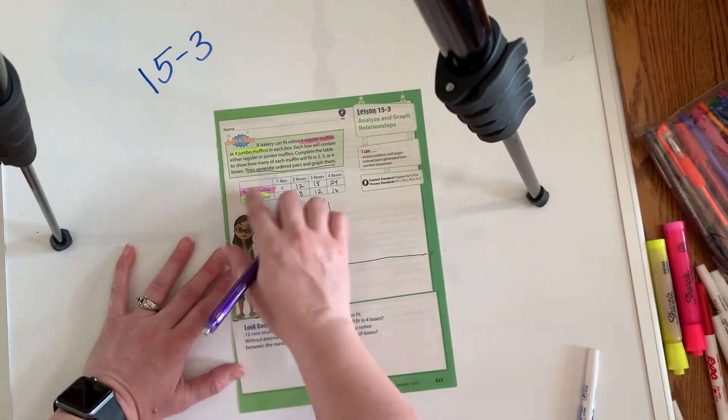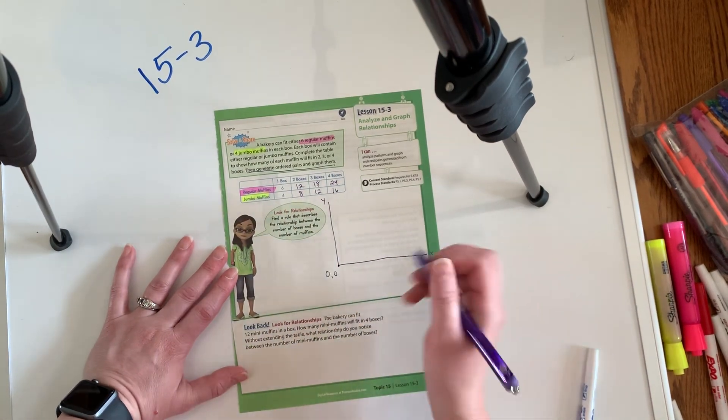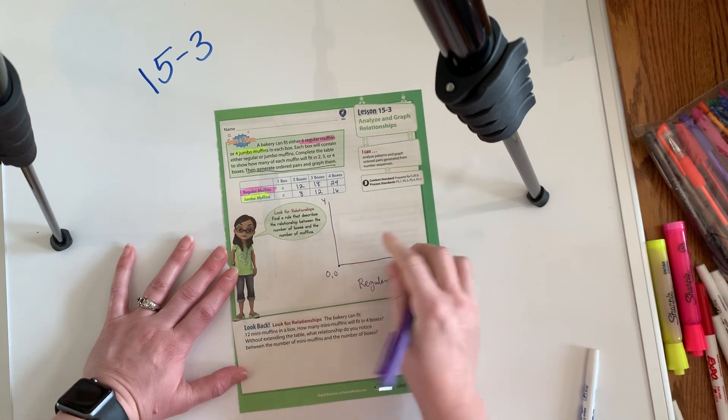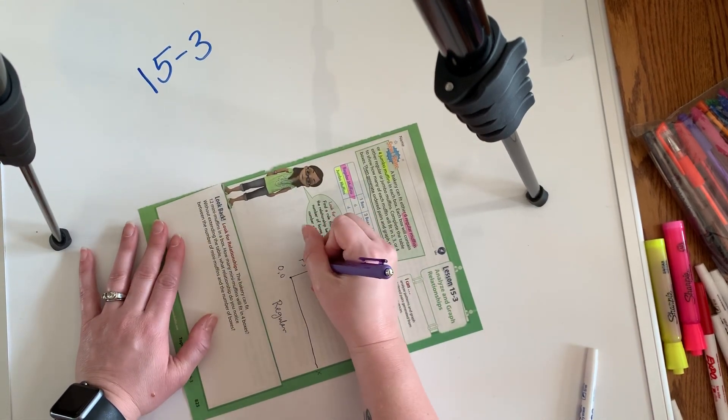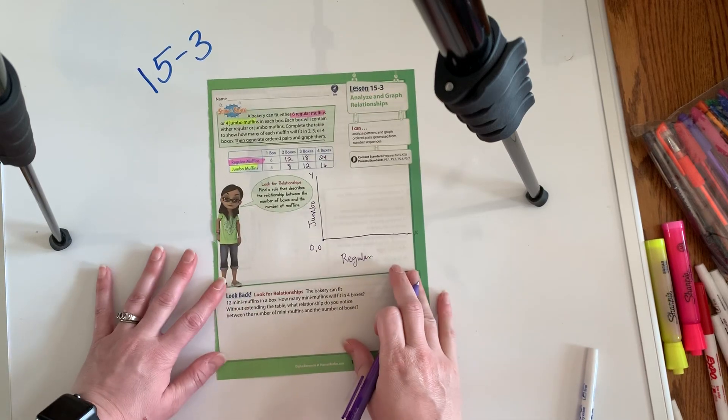And what I need to do is I just need to assign one to each. And so what I'm going to do is I'm going to call this regular. So I know when I'm working with the regular, I'm going to go on the X axis and then the jumbo is on the Y axis.